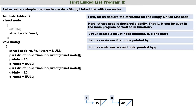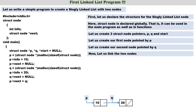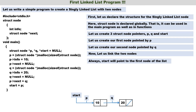Now let us link the two nodes. The address part of p should be connected to q. So instead of p->next = NULL, we write p->next = q. That's all — the two nodes are now connected. p is connected to q. Now we set start equal to p. start will always contain the address of the first node of the list. In this case, start points to the first node and there are two nodes in our linked list.